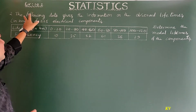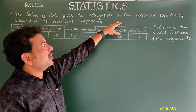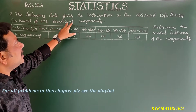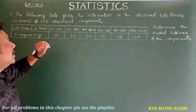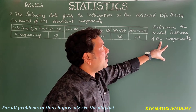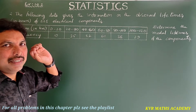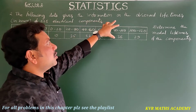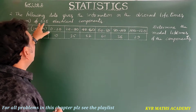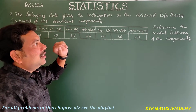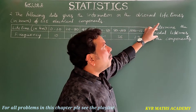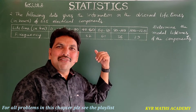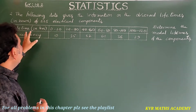The second problem in Exercise 14.2: the following data gives the information on the observed lifetimes in hours of 225 electrical components. We have to determine the modal lifetimes of the components, which means we have to find the mode of the given data.